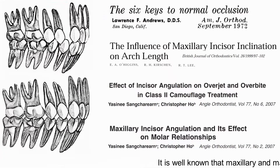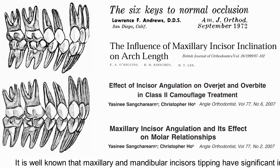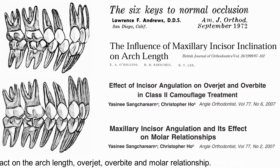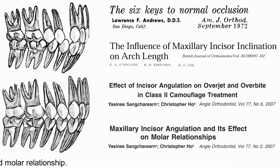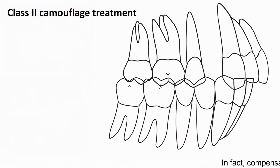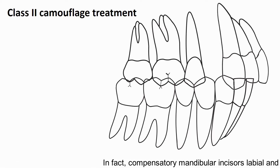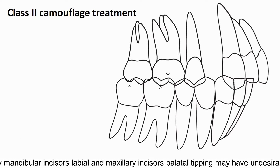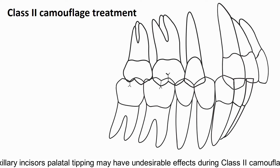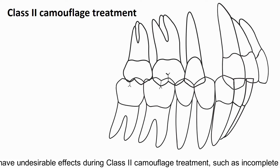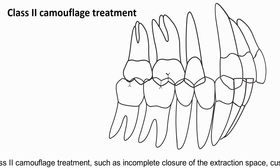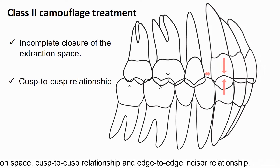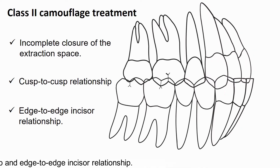It's well known that maxillary and mandibular incisor tipping have significant impact on arch length, overjet, overbite, and molar relationship. In fact, compensatory mandibular incisor labial tipping and maxillary incisor palatal tipping may have undesirable effects during Class II camouflage treatment, such as incomplete closure of the extraction space, cusp-to-cusp relationship, and head-to-head incisor relationship.